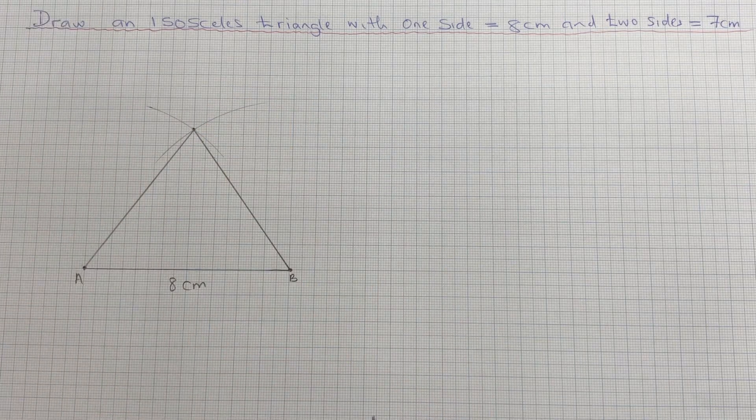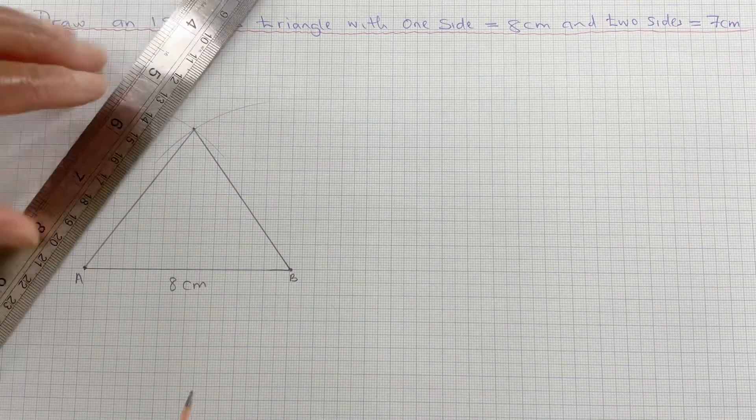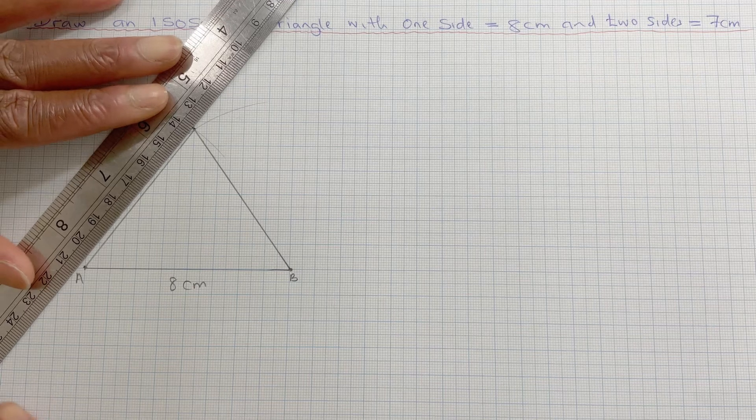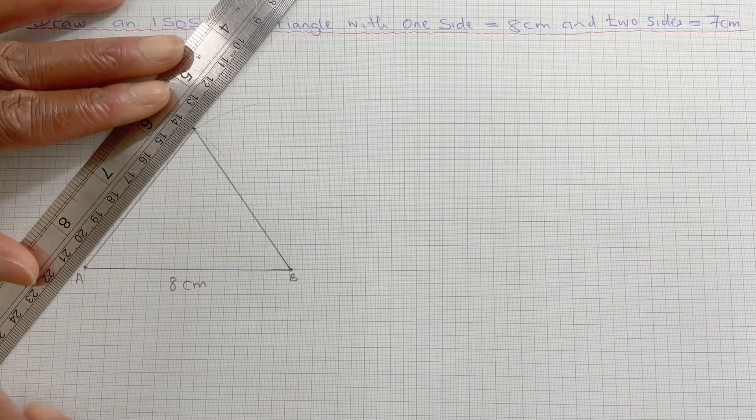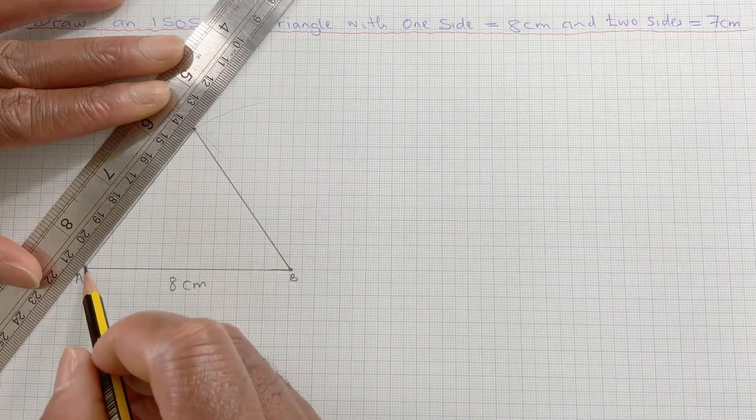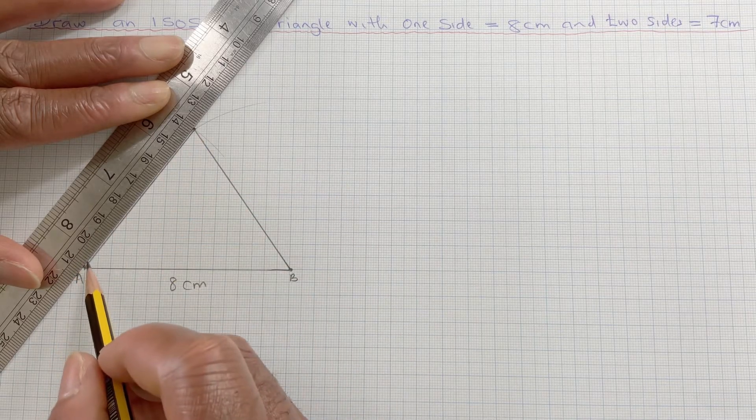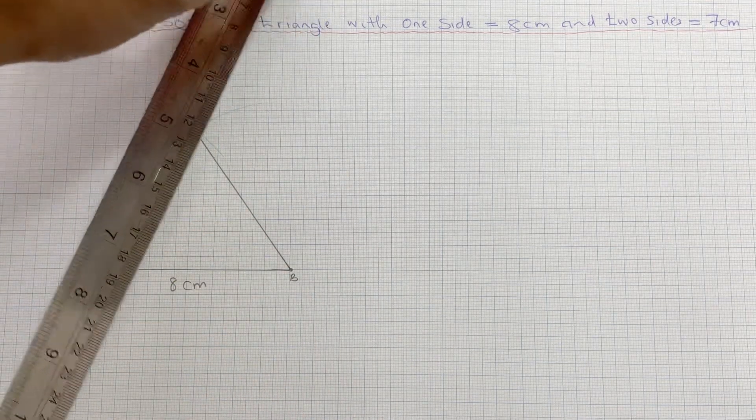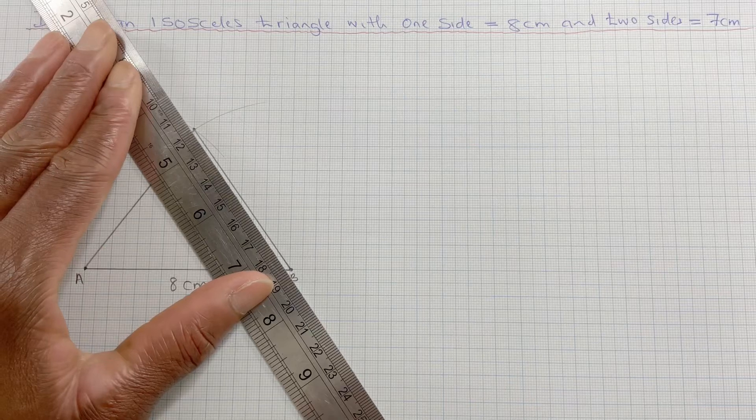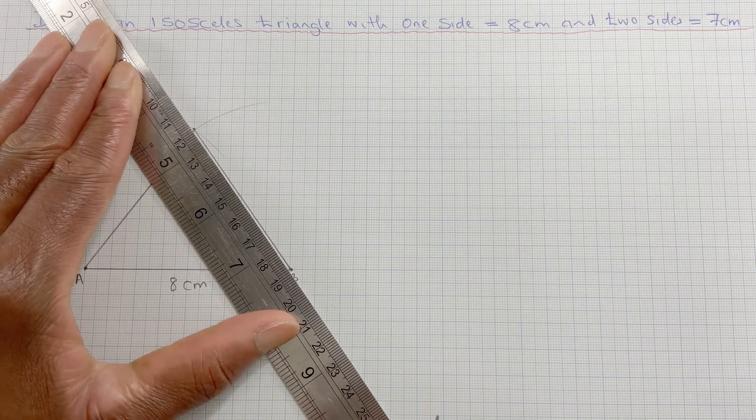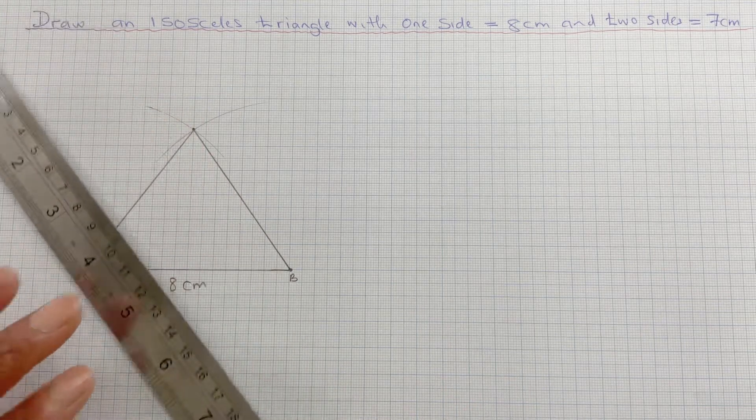We could measure it to see whether we've got 7 cm. So that's from 14 to 21. 14 to 21 is 7 cm. Let's do from 12 to 19, that's 7 cm. Also...